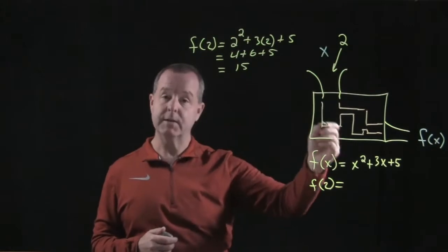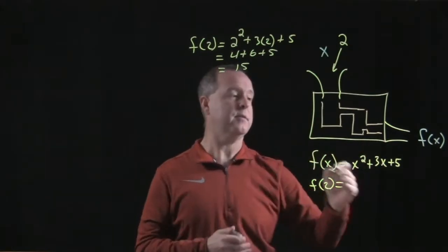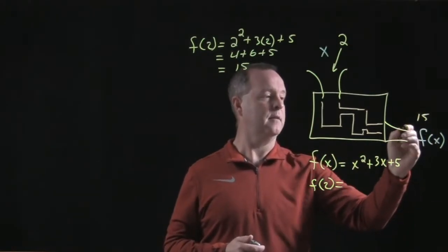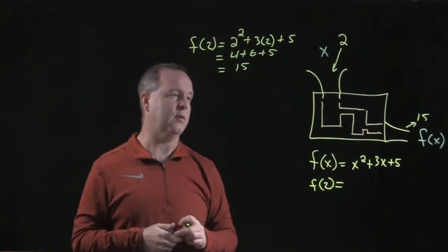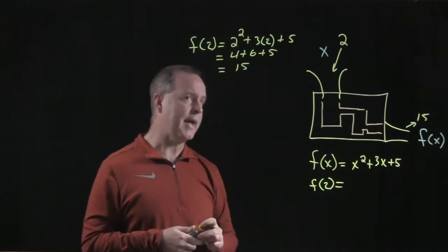So when I put a 2 into the function, what pops out? A 15 pops out. So I have a relationship now between 2 and 15, and that particular relationship we already know as a function.